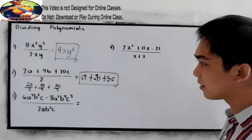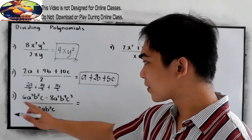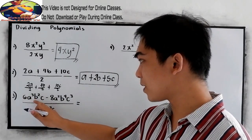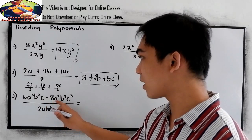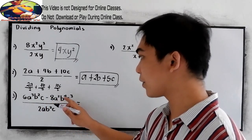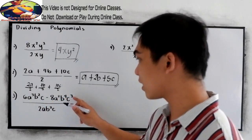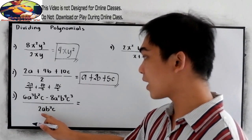And for number 3: 6a cubed b squared c minus 8a squared b raised to 4, c raised to 3, all over 2ab.